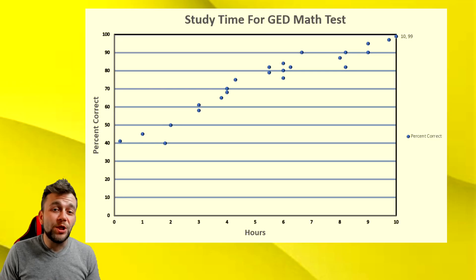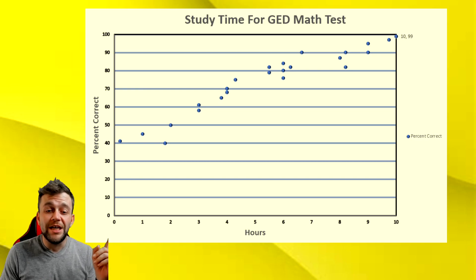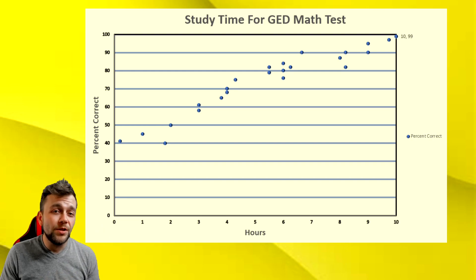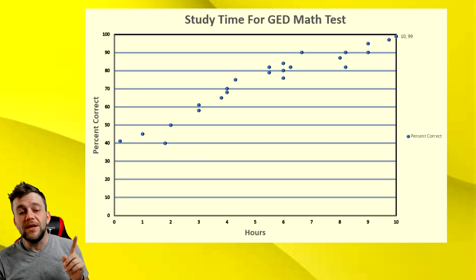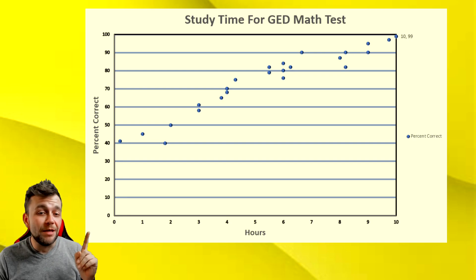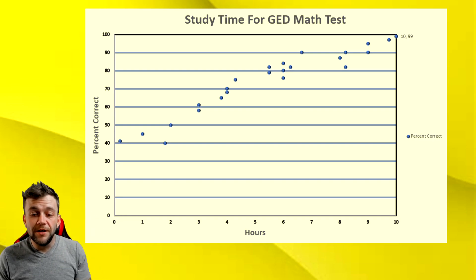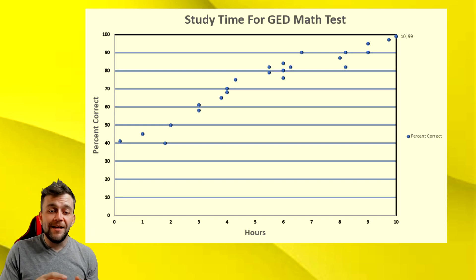For this first graph, we have what's called a scatter plot. What scatter plots are used for is to show a relationship between two different types of data. In this one, we have hours and percent correct. So this is study time for the GED math test. When you look at these graphs, you always want to read the titles and different labels. So what we have is study time for GED math test, percent correct, and the hours.